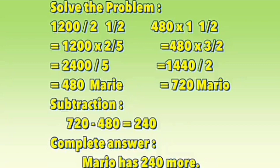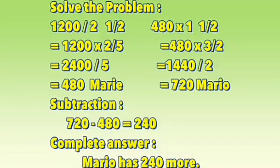So for one and a half, the amount is 720 for Mario, and for Marie it is 480, with a total of 1200. But that is not the final answer because the problem asks how much more money Mario has than Marie — so we need the difference. Since Mario has 720 and Marie has 480, we compute 720 minus 480 equals 240 pieces. So our complete answer is Mario has 240 pieces more. Checking: one and a half gives 720 for Mario and one whole gives 480 for Marie; 720 plus 480 equals 1200, so our answer is correct.